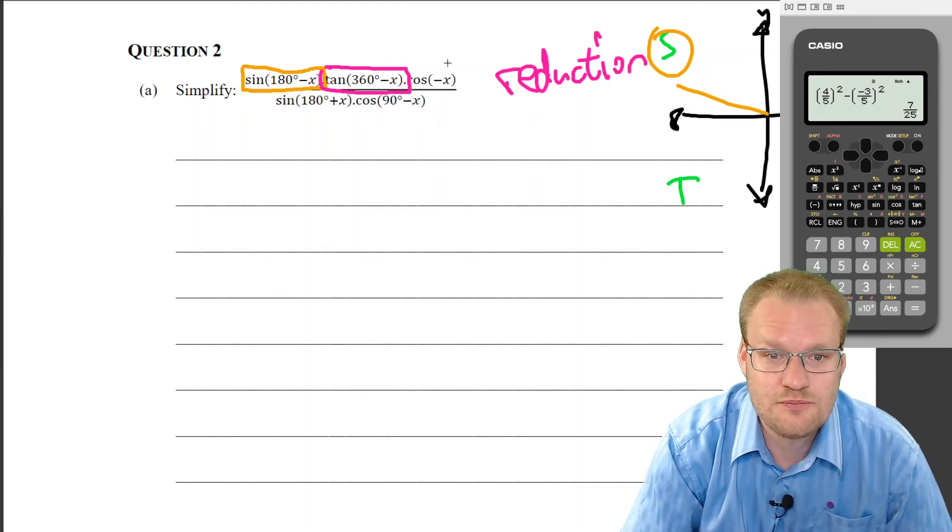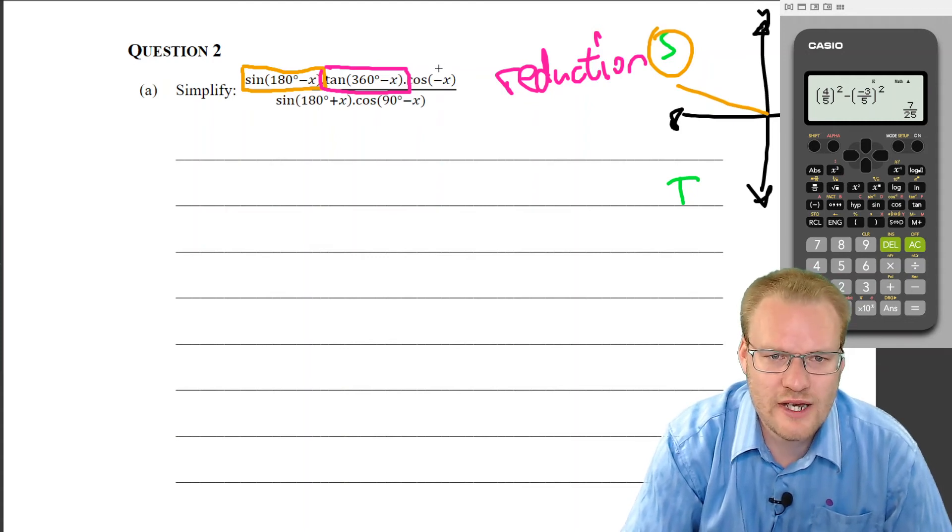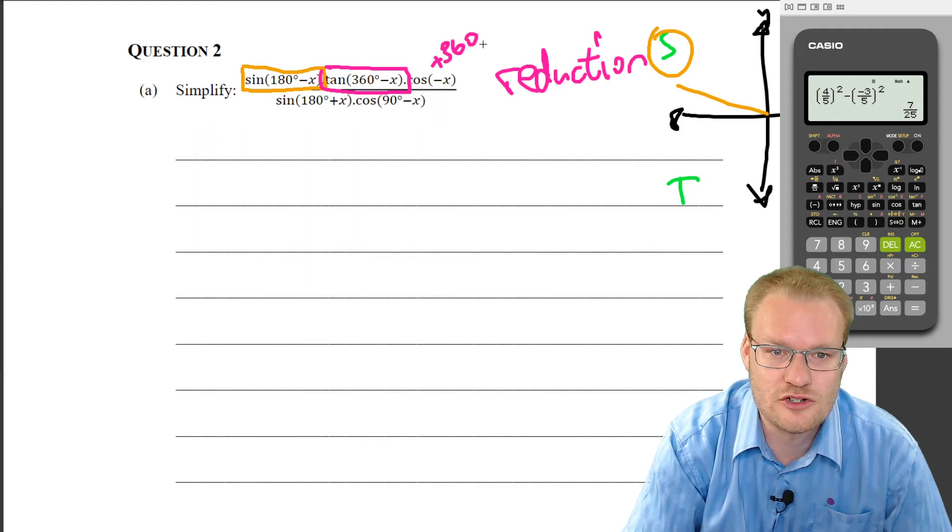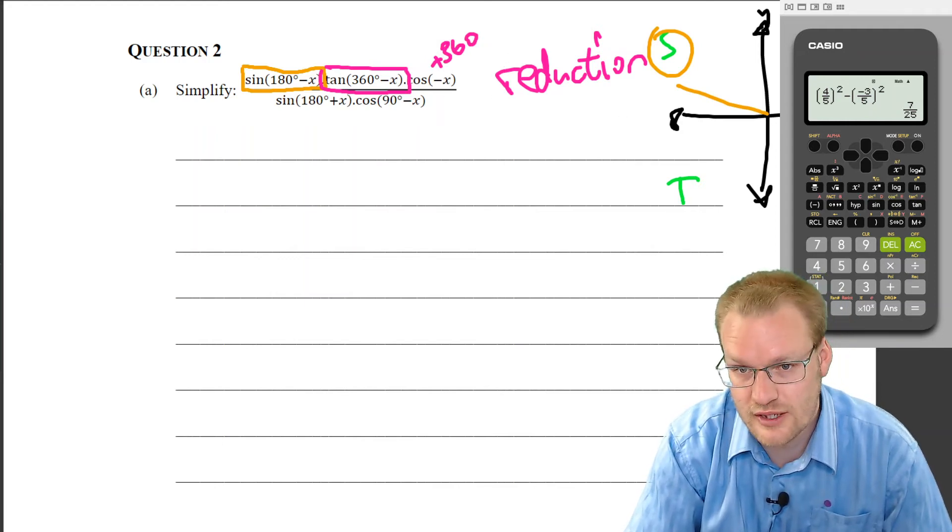The cos negative x, we can add 360, and then it's a positive angle. So if we want to, we can just go plus 360, then it's 360 minus x, so you know where that is.